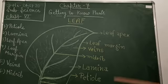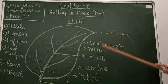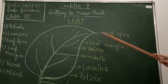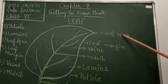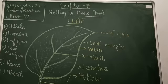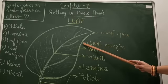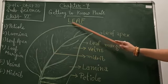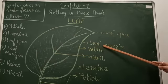Leaf Apex. It is the tip of the leaf. The tip of the leaf is called Leaf Apex. Leaf Margin. It is the outline of the leaf.